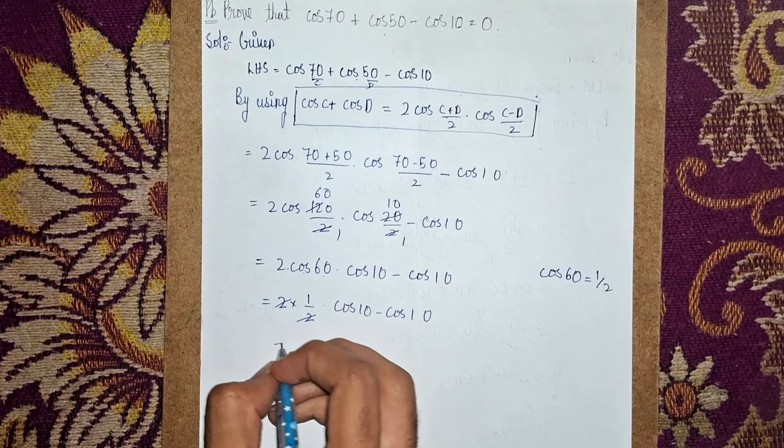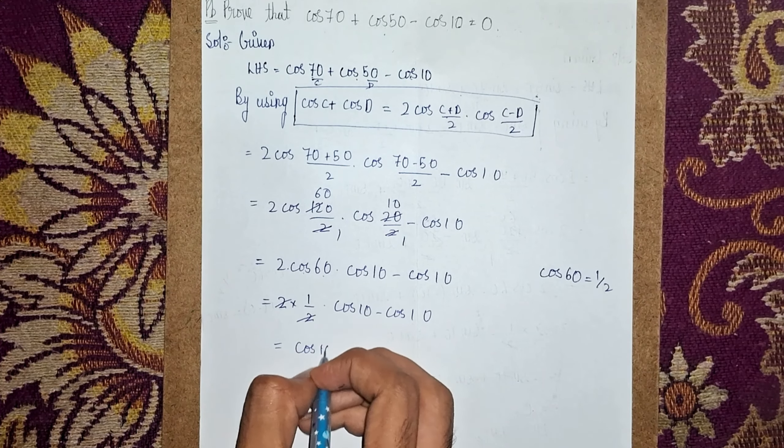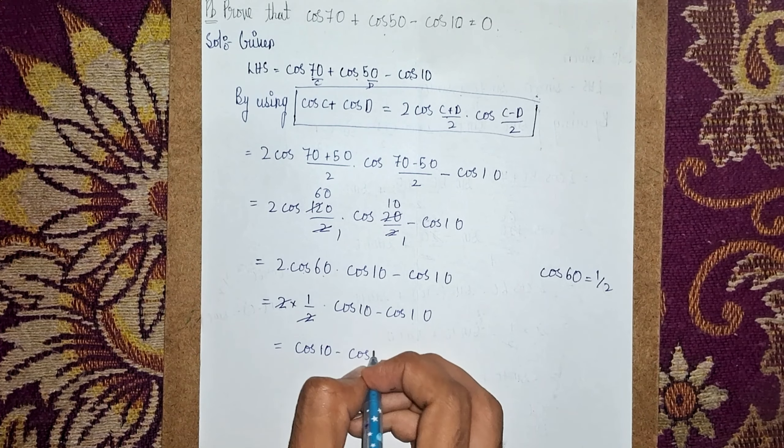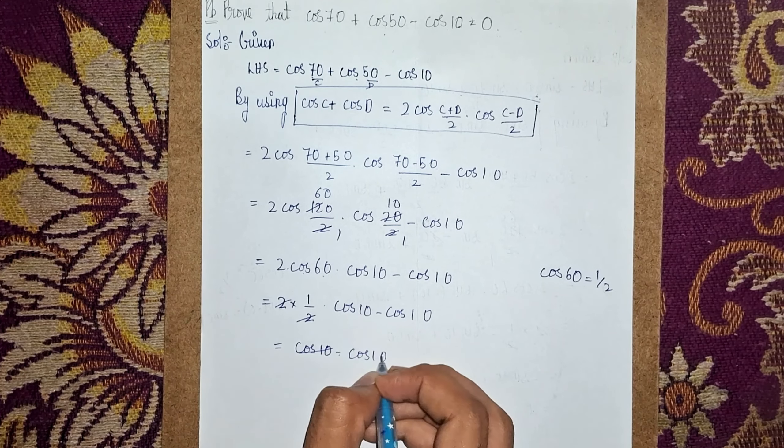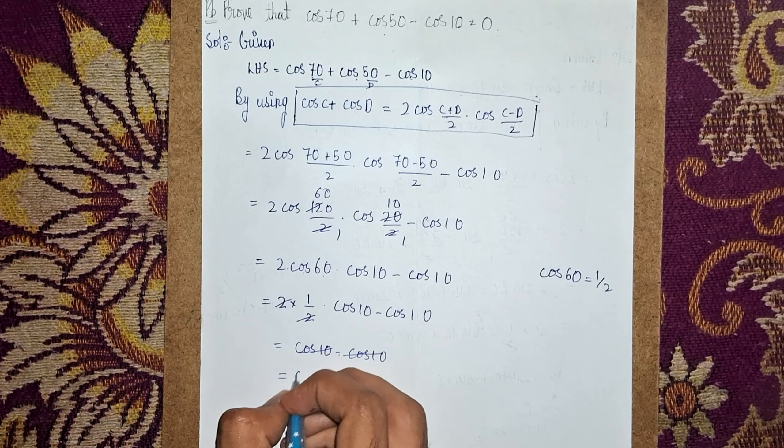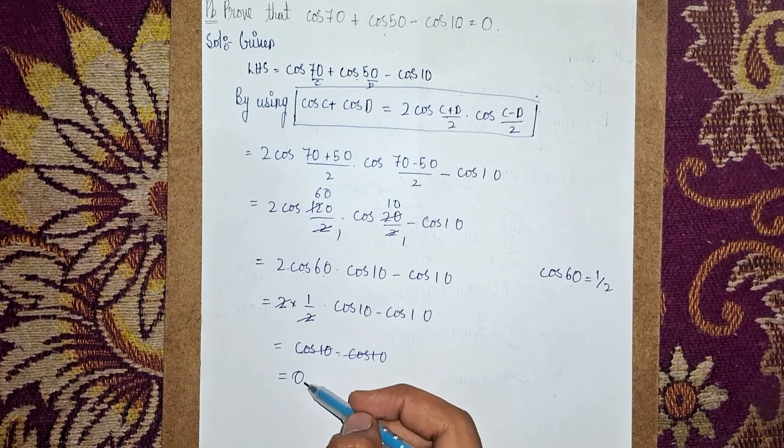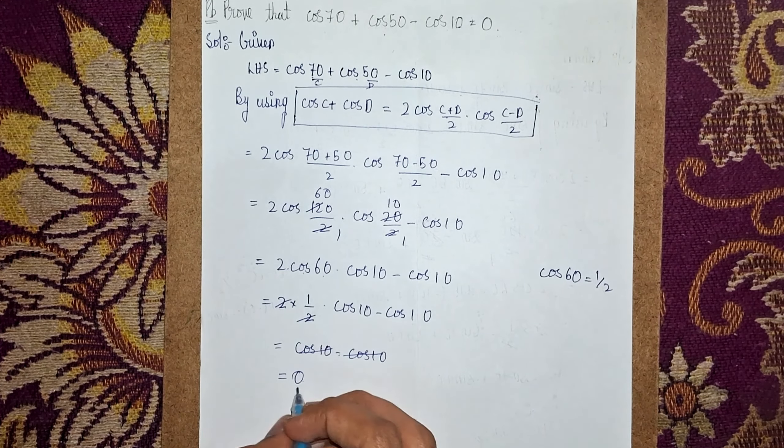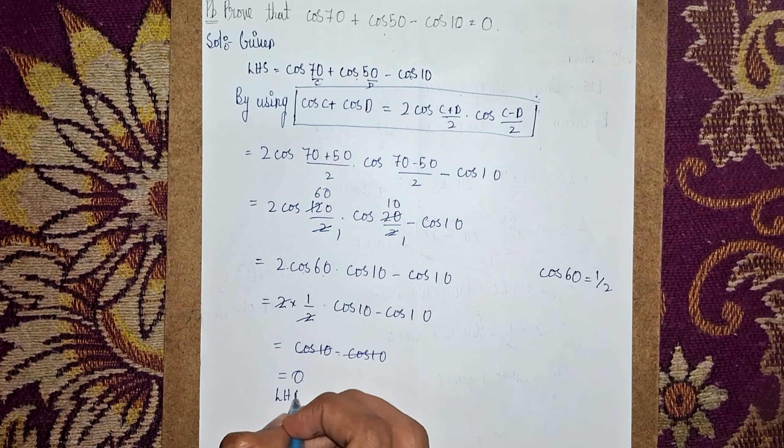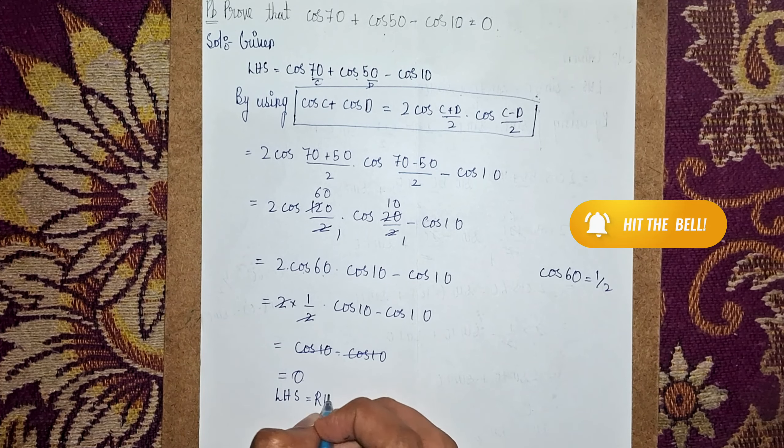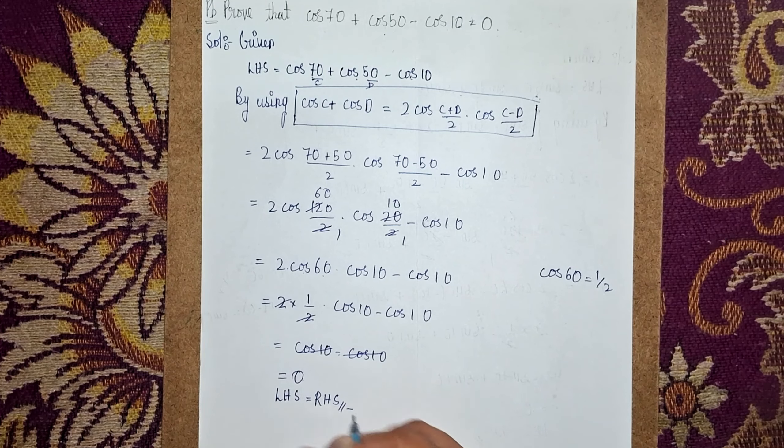Now this 2 gets cancelled. What is remaining: cos10° - cos10°. So this gets cancelled - our answer is 0. So when we solve this question, we get the answer as 0. Hence proved. LHS = RHS. Thanks for watching.